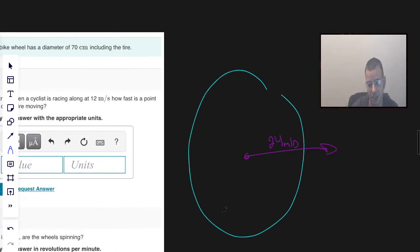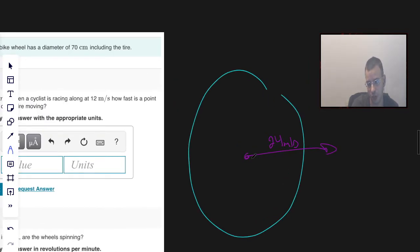A couple ideas here: the center of the wheel, which is what the bike is pretty much attached to, is moving at 24 meters per second. There's no slipping between the ground, so the bottom of the wheel and the ground aren't moving. This is going to be zero meters per second.